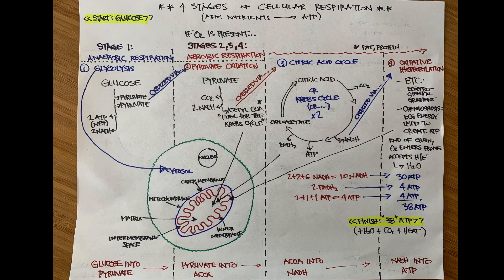Cell respiration is basically taking nutrients and making energy — in particular, ATP. We're going to start with glucose in the muscle cell. How it got there is irrelevant right now; whether it came through the bloodstream or was already in the cell as glycogen doesn't matter. We're only talking about glucose — fat and protein I'll touch on briefly later. We're going from glucose all the way through cell respiration, finishing with 38 ATP, though that's not a hard number — I'll explain that later.